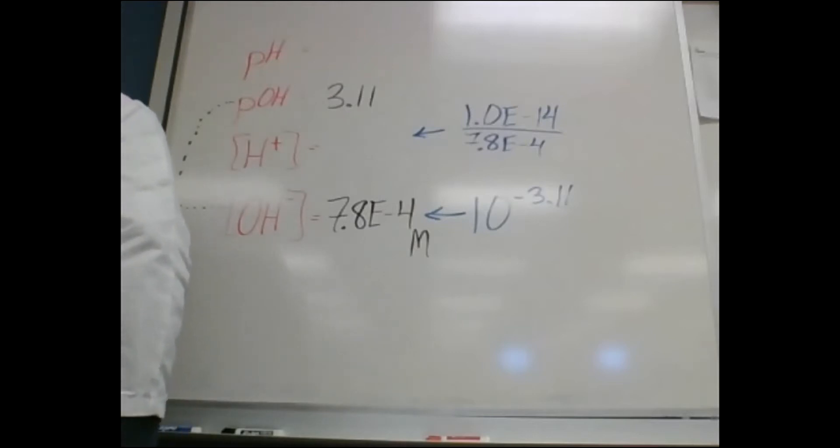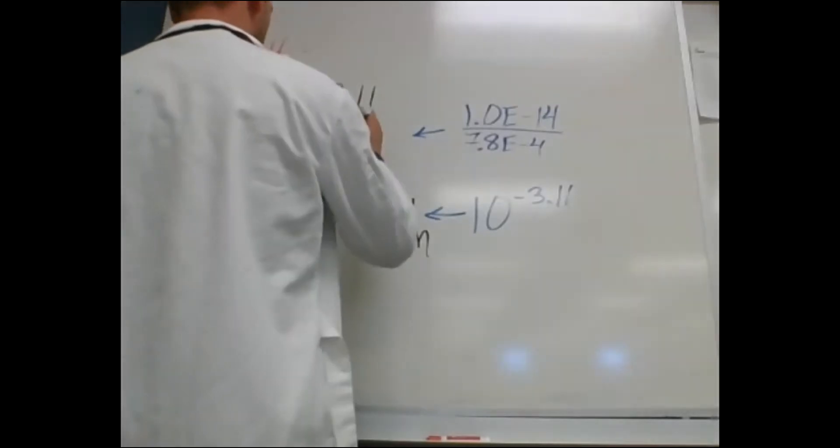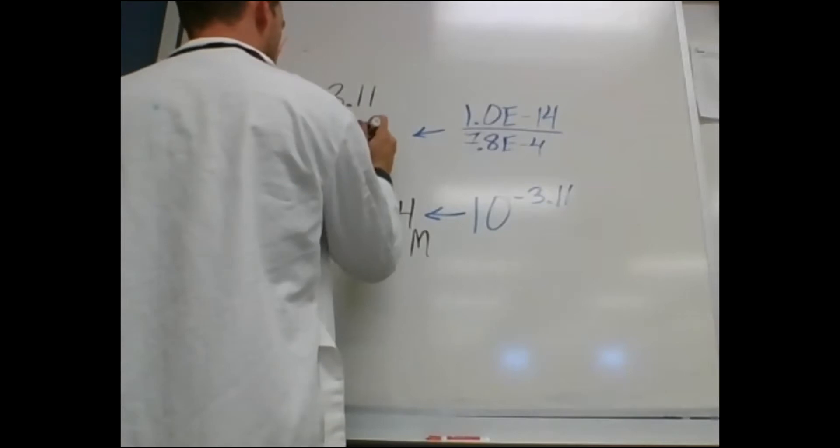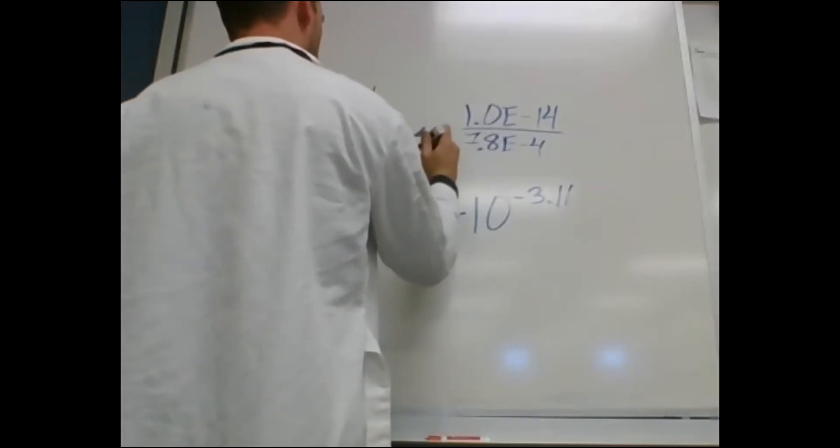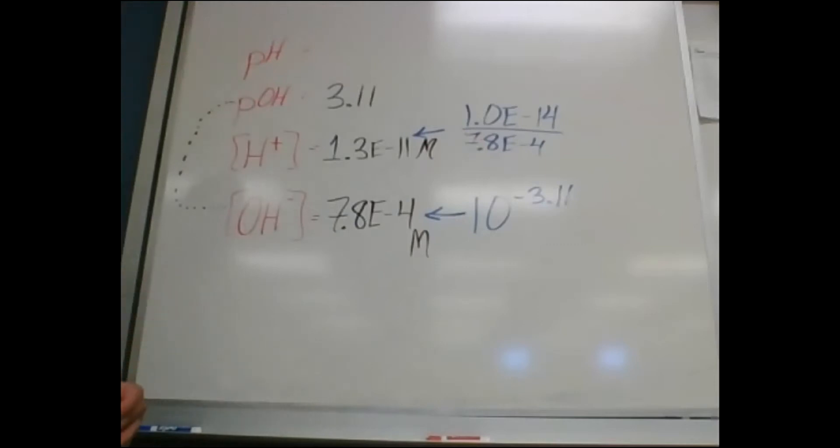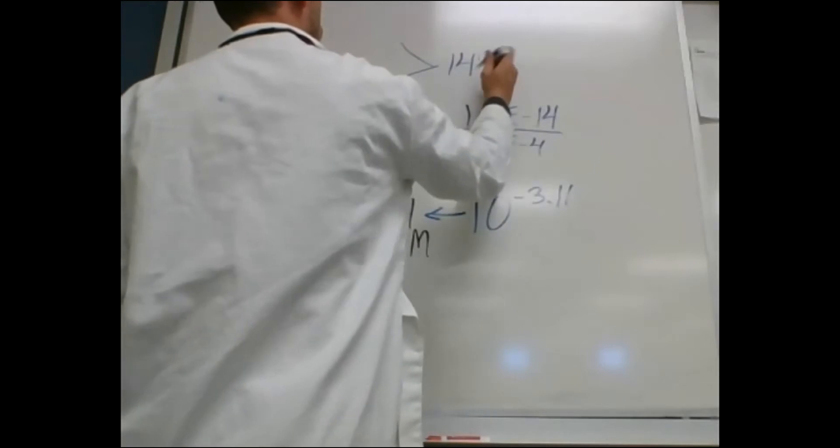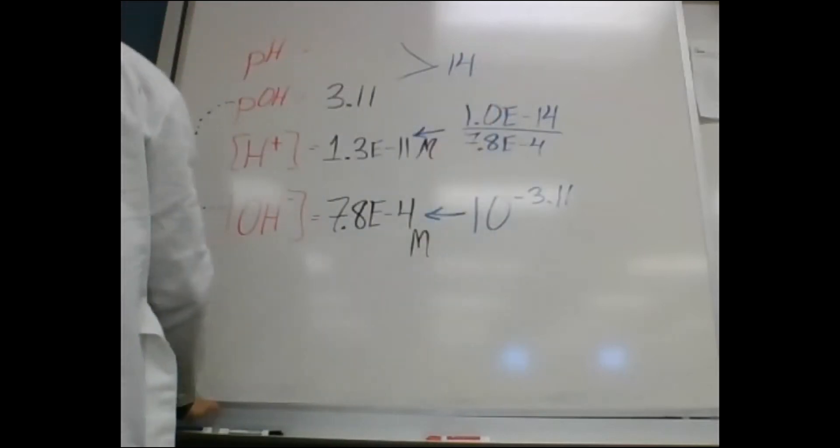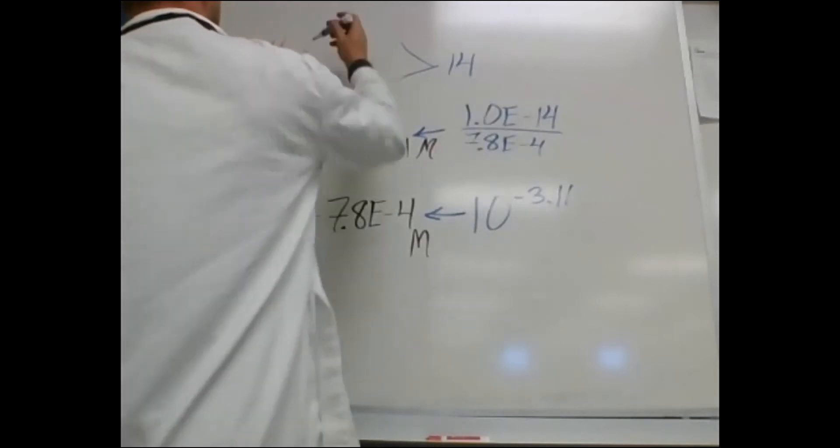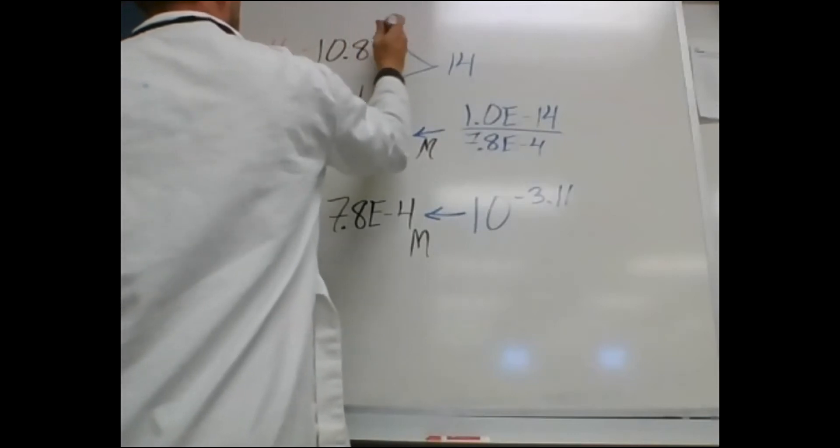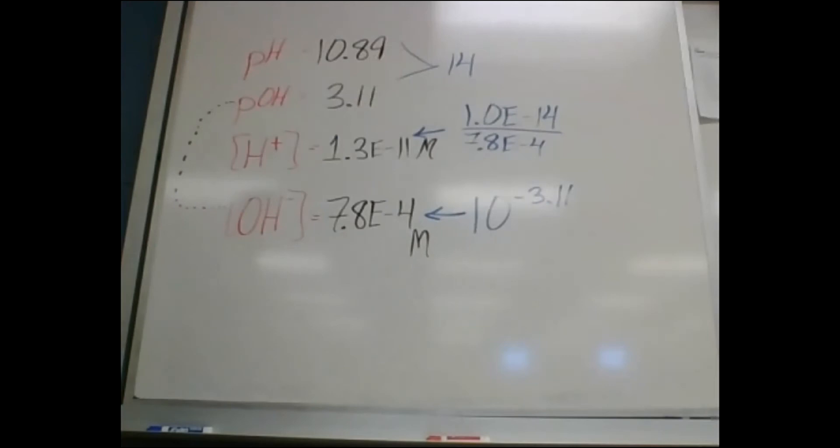1.3 E negative 11. So 14 minus 3.11 is 10.89 for the pH.